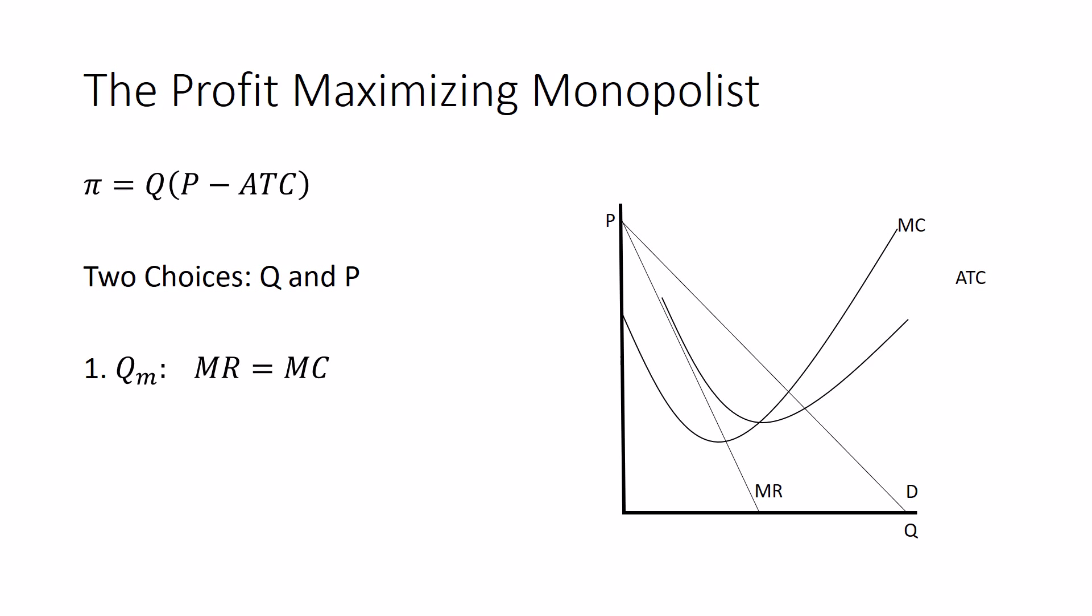It is so that we can capture every transaction where the marginal revenue, this line, is greater than the marginal cost, this line. Where marginal revenue is the money coming in for the next transaction, marginal cost is the money going out for the next transaction.